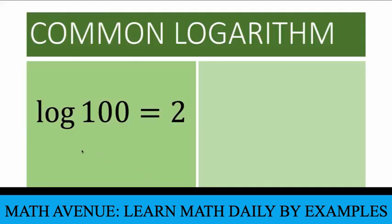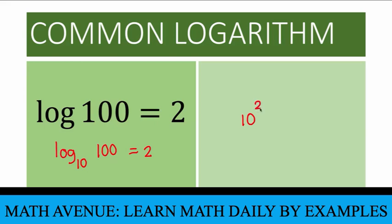There are instances when you can encounter a logarithmic form like this: the logarithm of 100 equals 2, where the base is not specified. In cases like this, it is implied that the base is 10 — so this is the same as the logarithm to the base 10 of 100 equals 2. To write this in exponential form, start with base 10, the exponent is 2, and that equals 100. Indeed, 10 times 10 equals 100.